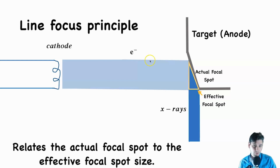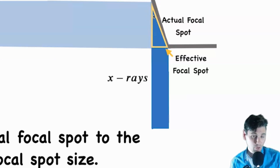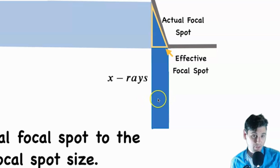The idea is we have electrons coming in, and if the width of the electrons can be larger than the width of the x-rays, what we call the actual focal spot on the anode can be bigger than what we call the effective focal spot — the size of the x-rays coming out.